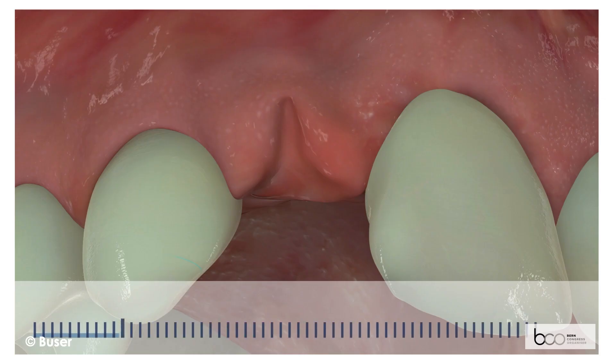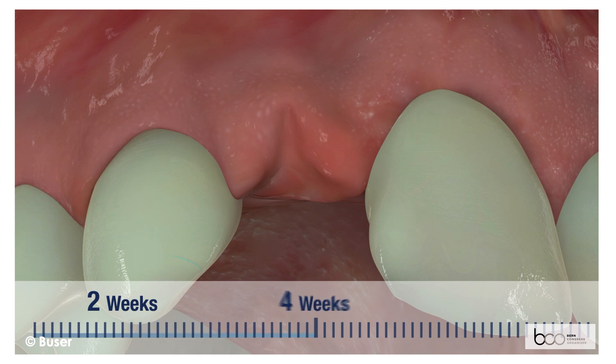During the 8 weeks of socket healing, keratinised mucosa spontaneously forms over the socket. Initially, there is a slight invagination of the mucosa at the crest. Then a gradual flattening is observed on the mid-facial aspect of the extraction socket.